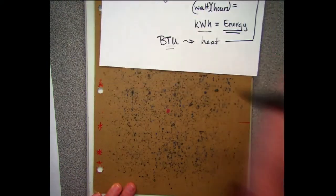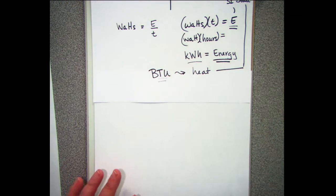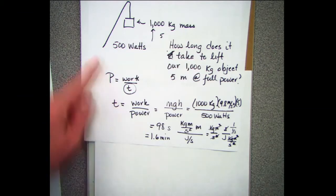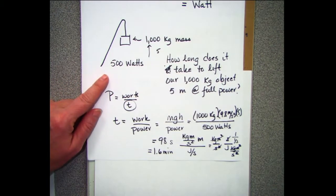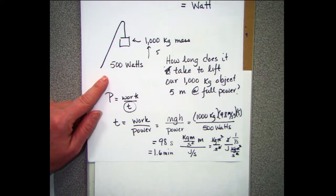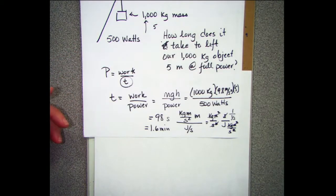A student asks whether the 500-watt, 1,000-kilogram crane problem is realistic given that one horsepower is 746 watts. The instructor confirms a 500-watt engine is real, and yes a horse can pull 1,000 kilograms — it may not go very far, but they can do it.